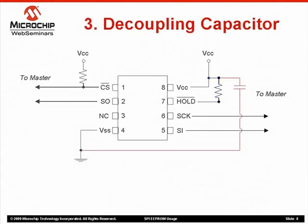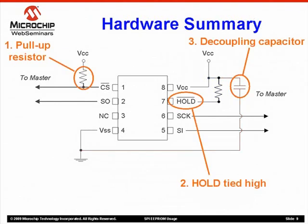Our third recommendation is to use a decoupling capacitor of approximately 0.1 microfarads, placed as close to the device as possible to help filter high-frequency noise from the power supply. Here is a quick review of our hardware recommendations: first, use a pull-up resistor on the chip select pin; second, use a pull-up resistor on the hold pin, whether it is connected to the master or has been disabled by being tied high; and third, use a decoupling capacitor.